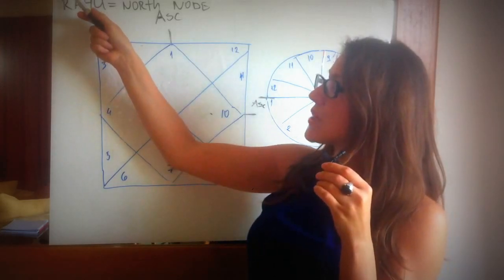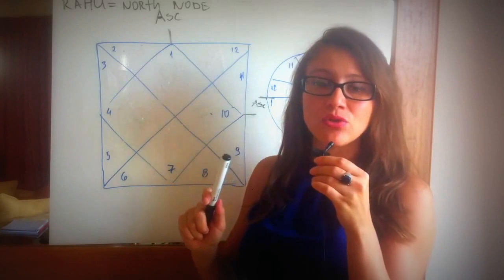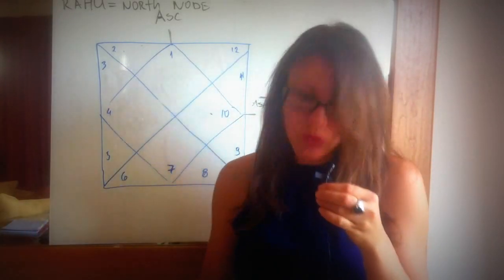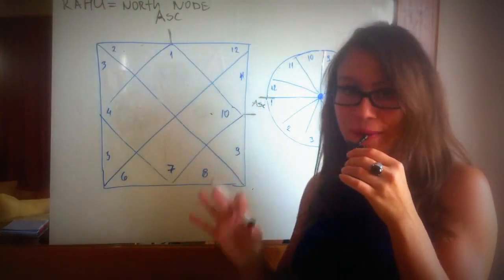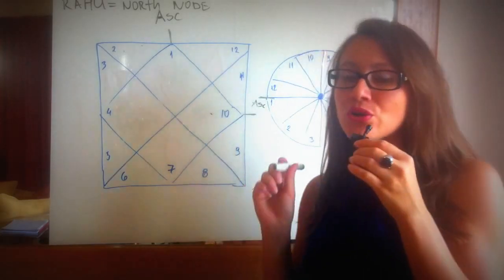So you have a bit of difficulties where Rahu is, in the areas of life where Rahu indicates, and because of Ketu, you also have some boredom in the house where Ketu indicates, because it's something you've already learned how to use, learned how to be good at. So they're not easy positions, but they're very interesting because it will give you such depth of understanding about yourself.